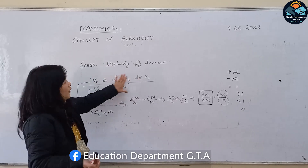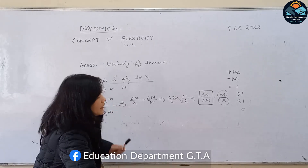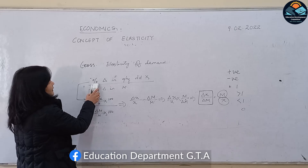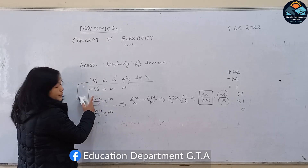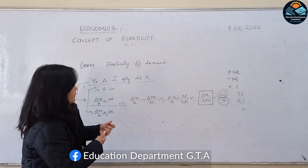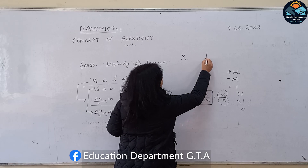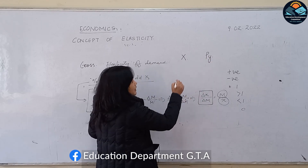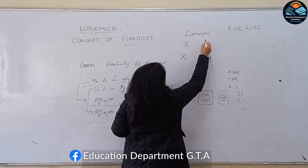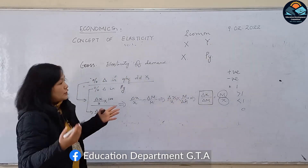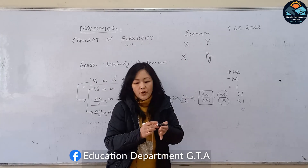The formula is more or less the same for all three concepts with just a few differences. For cross elasticity of demand, the formula is: percentage change in quantity demanded of commodity X divided by percentage change in price of commodity Y, where PY is the price of commodity Y. So we have taken two commodities — commodity X and commodity Y.